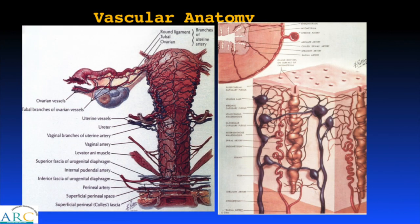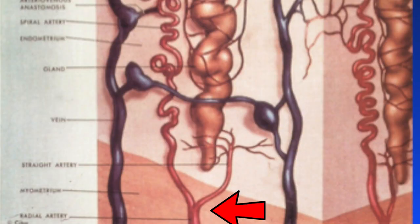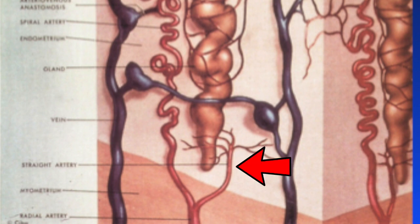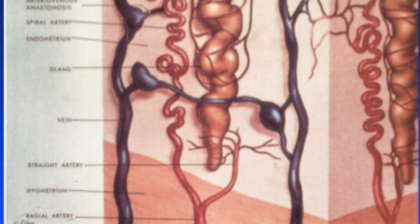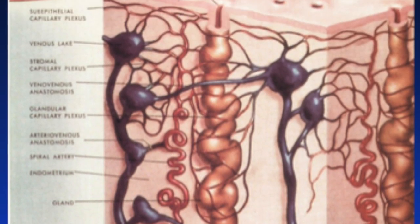Let us quickly brush through the vascular anatomy of the uterine artery. It is a branch of the internal iliac artery and enters the uterus at the corpus cervical junction — the site where we perform Doppler examination. The uterine artery anastomoses with the opposite side via arcuate arteries, which give rise to radial arteries that branch into straight arteries supplying the basal endometrium and spiral arteries that respond to circulating hormones and play a key role in implantation.